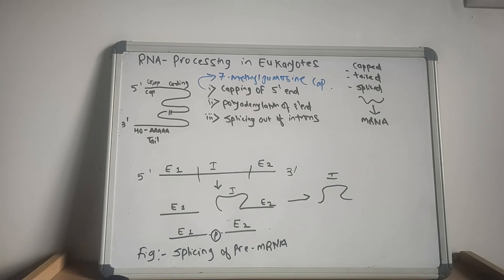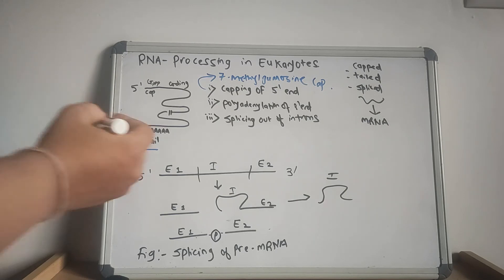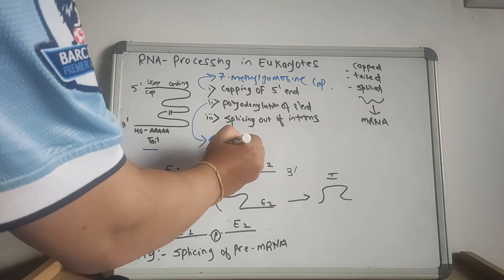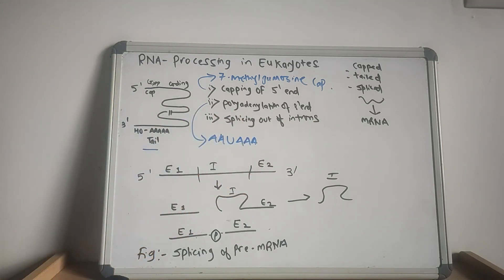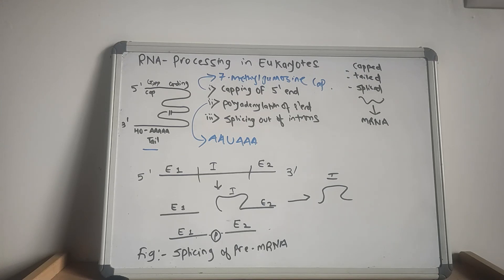Another processing step is the polyadenylation of the 3' end. A poly-A tail is attached to the 3' end. In this process, an endonuclease cleaves the molecule on the 3' side of the sequence AAUAAA, which is also known as the poly-A addition signal. Then poly-A polymerase adds a poly-A tail of about 200 A's to the new 3' end. The poly-A tail protects the message against rapid degradation and aids in transport to the cytoplasm. A few mRNAs, for example histone mRNA, have no poly-A tails.